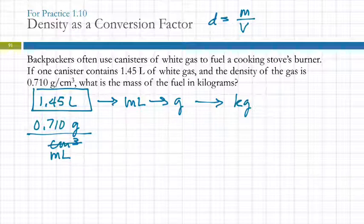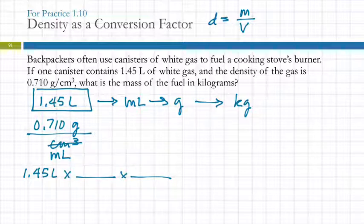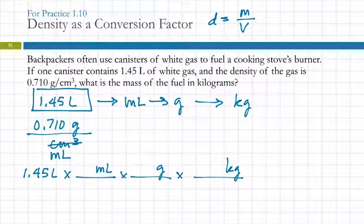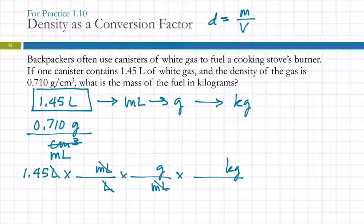Three fractions this time. We start with 1.45 liters, times a fraction, times a fraction, times a fraction. The path is: liters to milliliters, to grams, to kilograms. Once you get the path, everything should fall into place — we're just doing a pattern. We put liters in the bottom so those cancel out, milliliters in the bottom so those cancel out, grams in the bottom so those cancel out.